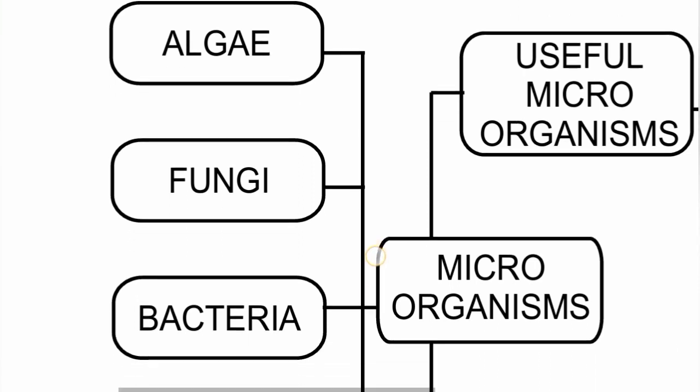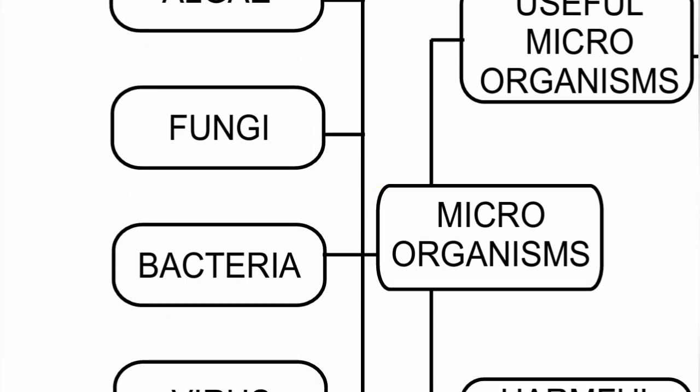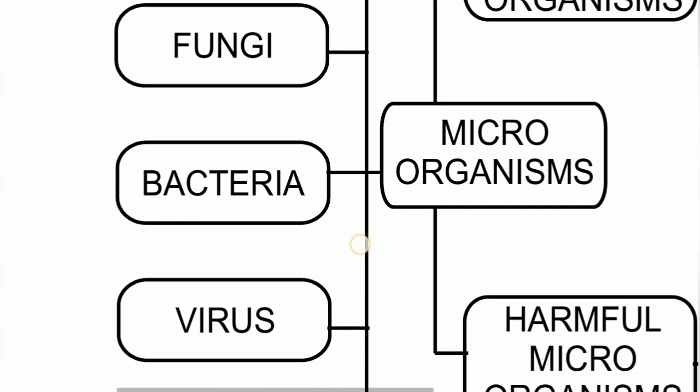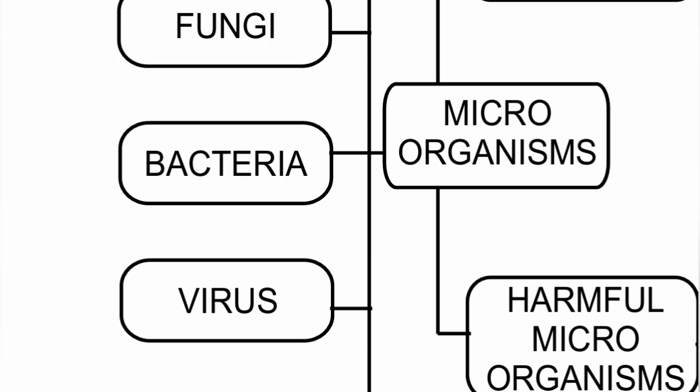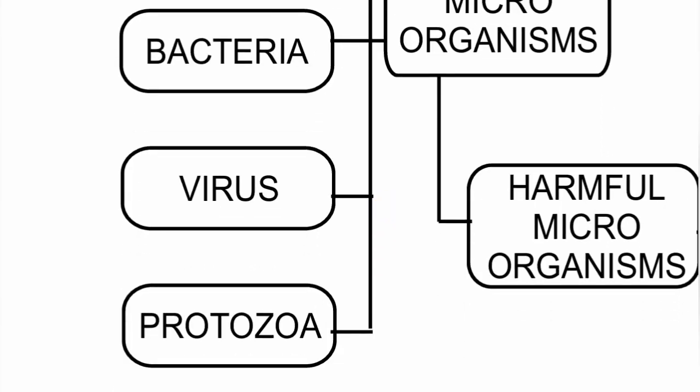Algae are eukaryotic organisms with chlorophyll. Fungi are a group of eukaryotic organisms but lack chlorophyll. Bacteria are single-celled prokaryotes — one cell without a nucleus. Virus are tiny particles made of genetic material and protein. Protozoa, from 'protos zoan,' are single-celled eukaryotes.